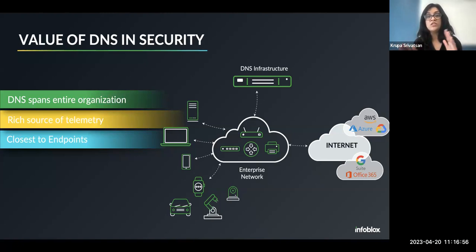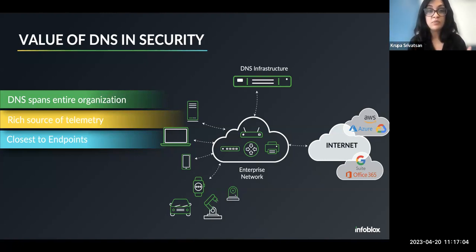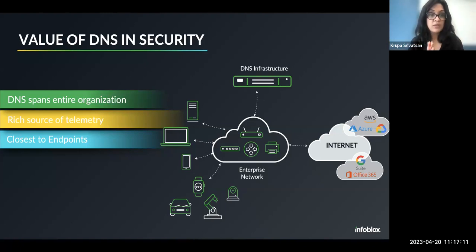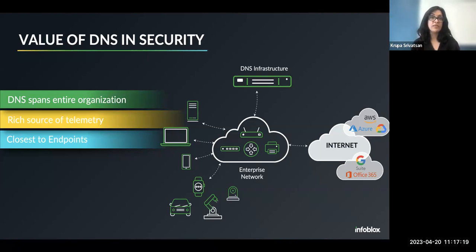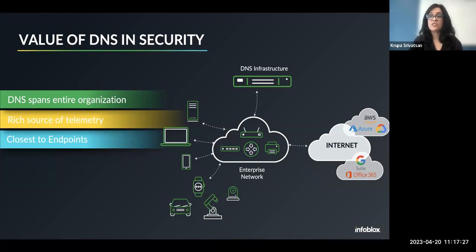DNS has a rich source of telemetry. At any given point in time, DNS knows what a user or device has been doing, what it is doing now, and what it has been doing in the last week or 30 days. There's a rich source of telemetry in the DNS logs that tells you what resources each device has been accessing and where it has been going on the internet. Traditionally DNS has been thought of as a network protocol, but from a security perspective it is a control point that is everywhere on your network and sees the first request from any device anywhere.